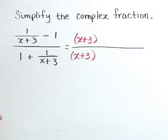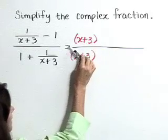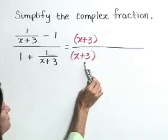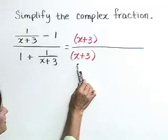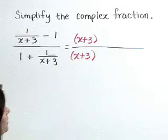Notice here that we're only multiplying by a factor of 1. The same thing over itself is equal to 1. Thus, we're not changing the value of anything, but we are going to change the way that it looks.